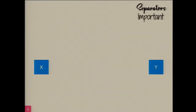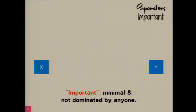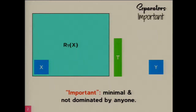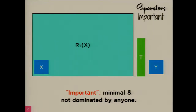A separator is important if it is dominating and also minimal. The intuition is that between X and Y, we are interested in separators that are as far away from X as possible and consequently as close to Y as possible. T is important if it's not dominated by anybody and if it's also minimal. In some sense, if there was another separator with a larger reachability set, that would be the important one, not the former.